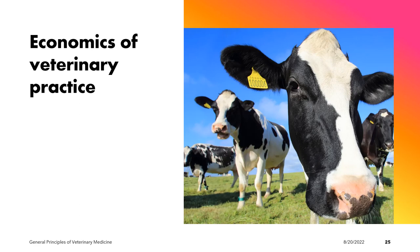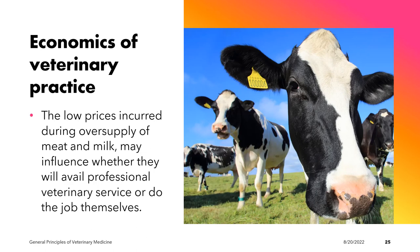Another very important aspect of food producing animal practice is the economics of veterinary practice. A key variable that farmers consider when availing veterinary services is the financial returns they get from their commodities. For example, low prices incurred during oversupply of meat and milk may greatly influence whether the farmers will avail professional services or do the job themselves.